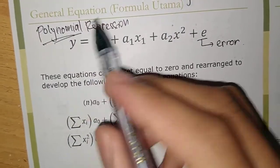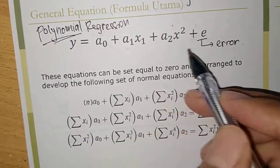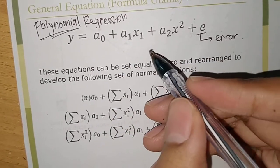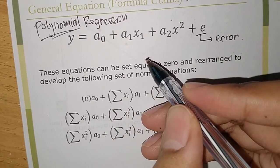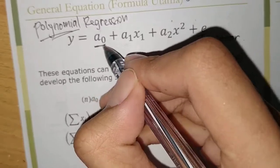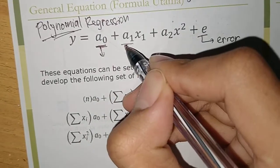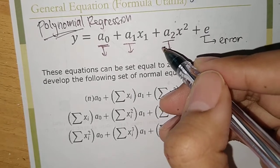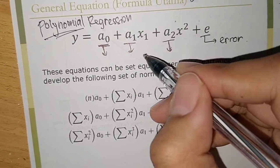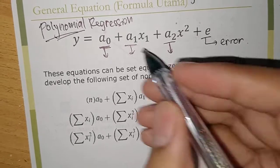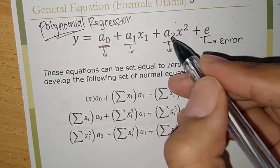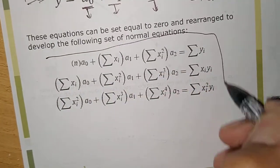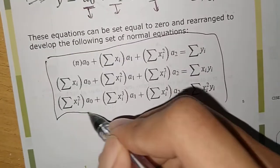We will get back to the polynomial regression. This is the general equation, and our challenge is going to be finding the value of A0, A1, and A2. This is, I think, the most difficult part of polynomial regression, and these values can be found using this formula.